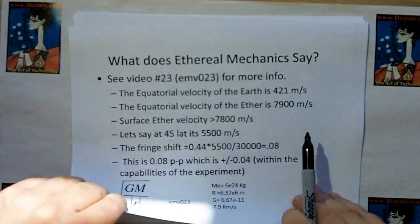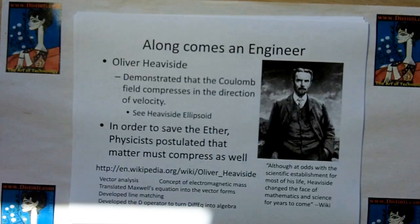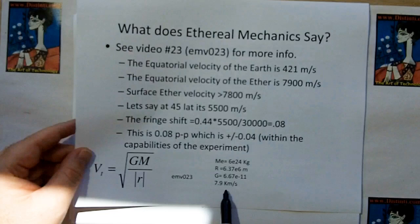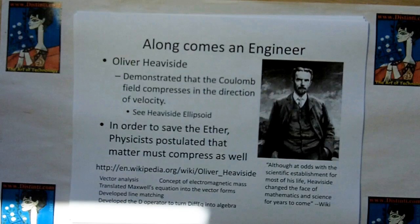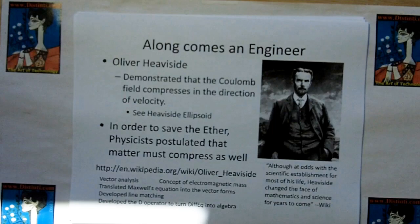This calculation is from video 23. If the Michelson-Morley could have measured the ether, it should have measured the ether. That 7.9 km/s is at the equator, so it wouldn't matter what time of day they measured it. Then along comes an engineer named Oliver Heaviside. He demonstrated that the Coulomb field compresses in the direction of velocity. Interestingly, if you have imbalanced charge, you can measure velocity — you can detect an effect related to velocity. There's a thing called the Heaviside ellipsoid, if you want more detail.